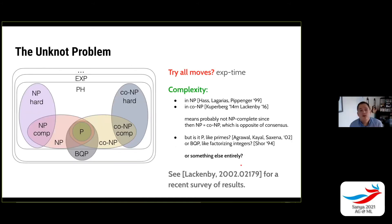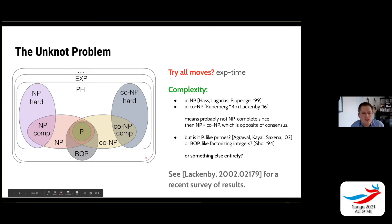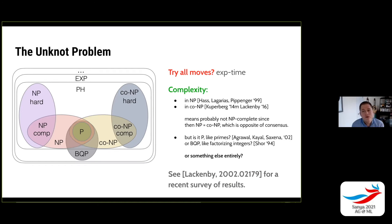A good bit is known about the complexity of the unknot problem. There's a great paper by Lackenby with a survey of results in this direction. One way to solve it is to try all possible combinations of Reidemeister moves, but that complexity goes up exponentially with the number of crossings. More generally, the complexity of the unknot problem is known to be in NP — that's an old result from the late 90s.